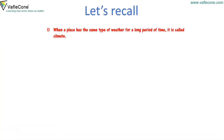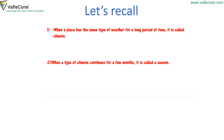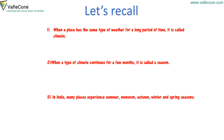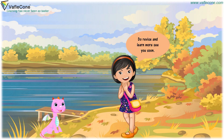Let's recall. When a place has the same type of weather for a long period of time, it is called climate. When a type of climate continues for a few months, it is called a season. In India, many places experience summer, monsoon, autumn, winter, and spring season.